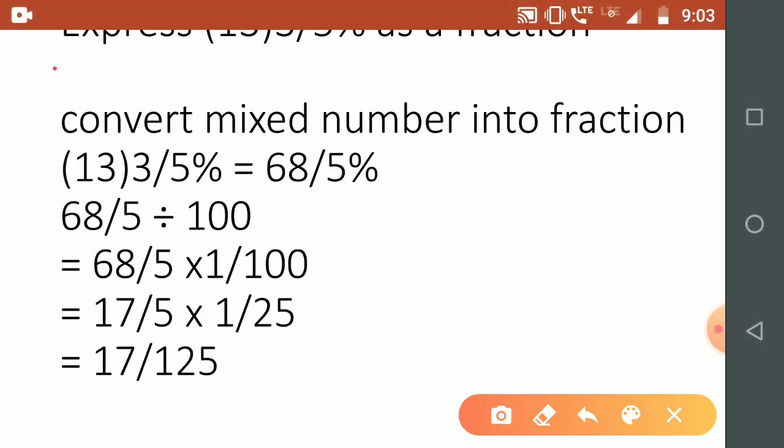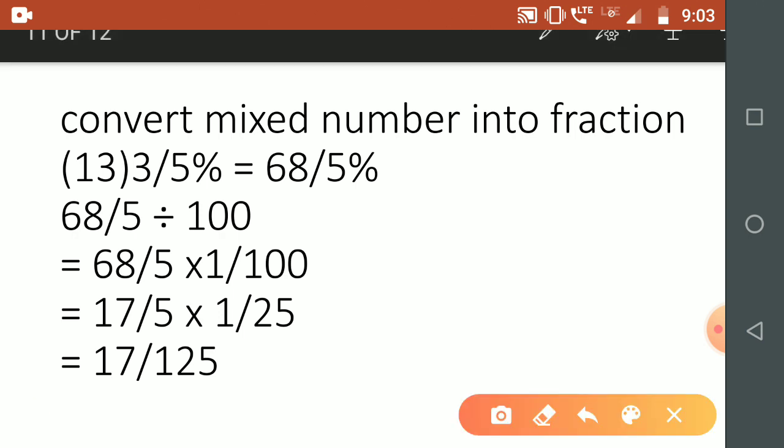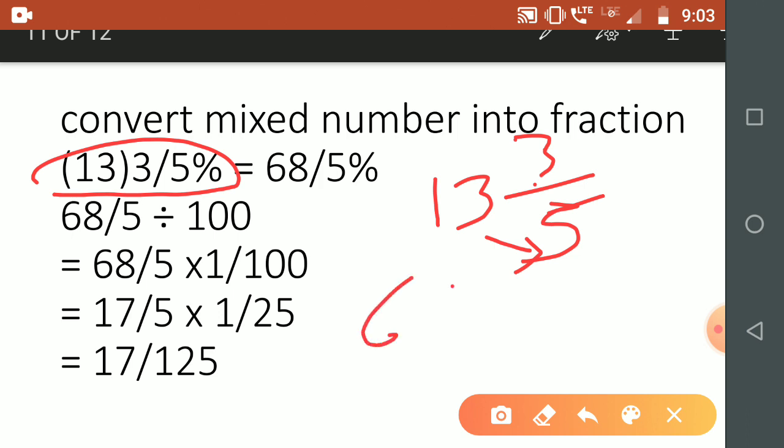Here the question is, express this number 13 and 3 by 5 percent. It is a mixed number like 13 and 3/5. This is a mixed number given to you that you have to convert into proper fraction. We will convert it into proper fraction by first multiplying 13 by 5. So 13 times 5 is 65, then add 3. So 65, 66, 67, 68. So 68 by 5 percent, we got the answer.